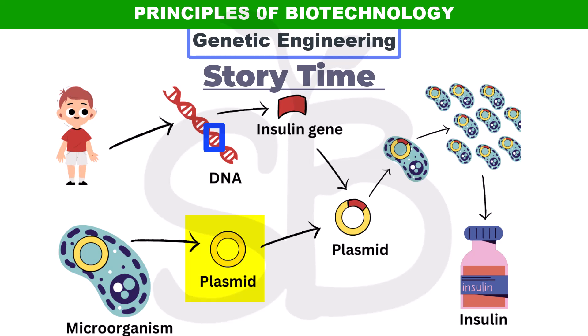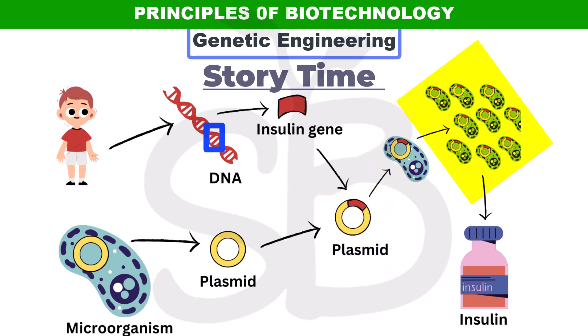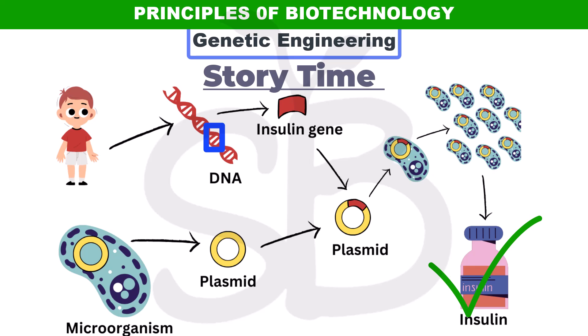This plasmid is used by the bacterium. We multiply this DNA — the human insulin gene — into the bacterial DNA. If you multiply that into the bacteria, it will be multiplied by the bacteria. If we take the genes to the bacterial DNA, the bacteria will produce proteins that include insulin.